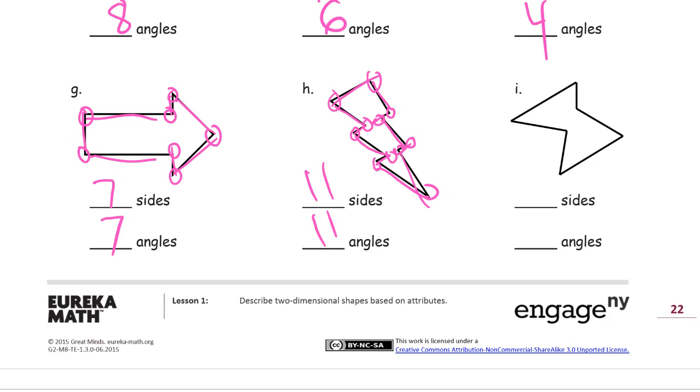And now, one, two, three, four, five, six sides. And angles. One, two, three, four, five, six angles.